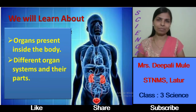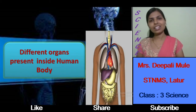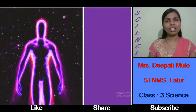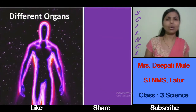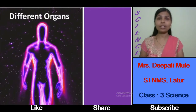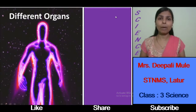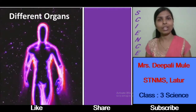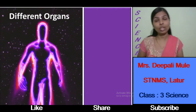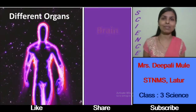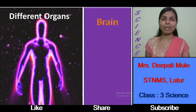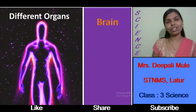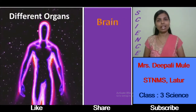Let us see all the organs present inside our body. In our body, many different organs are present. Organs means the different body parts present inside our body, and all these parts are working together. This human body is very complex, but we will make it very simple. The first part we are going to learn about is the brain.